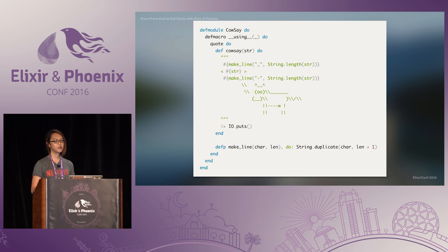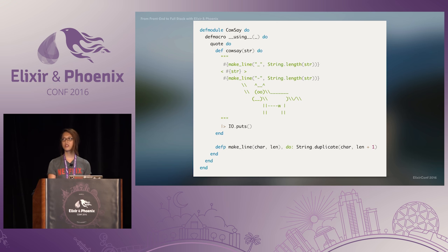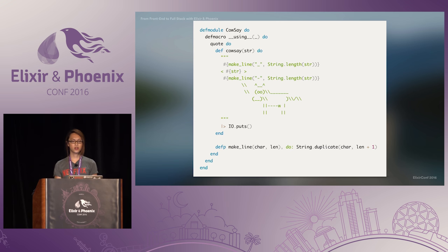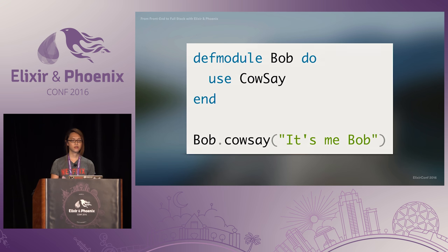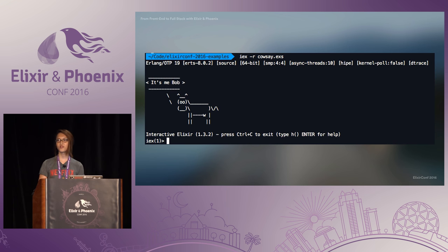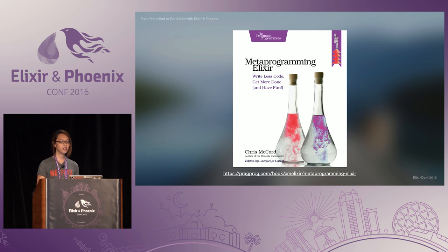Now let's try to make our own simple macro. I'm a big fan of this command-line utility called cowsay — basically it takes some text as arguments and returns a picture of a cow saying it. Let's define a really simple macro that does that. We define this macro using double underscores — also known as dunder — which gets called when you bring in the module to another module using the use keyword. This macro will then define the function on the consuming module at compile time. So now if you use this CowSay module in another module, that macro gets called and defines our function, and you can call bob.cowsay with some text. It renders in our terminal, which is pretty cool. If you're interested in macros, you can read Chris McCord's book — he knows a thing or two about them.